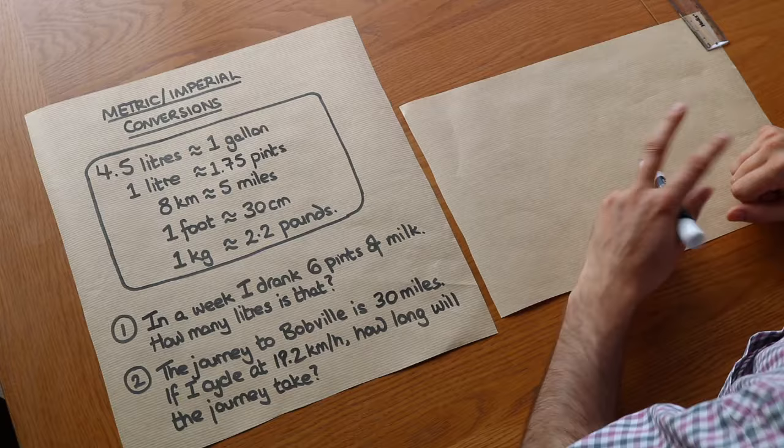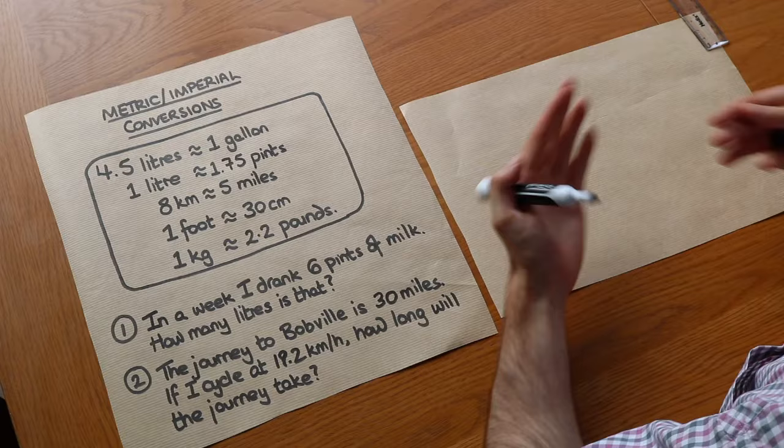Now just in case you're wondering what's the difference between a metric unit and an imperial unit, with metric units everything comes in powers of 10, so that might be 10, 100, 1,000.